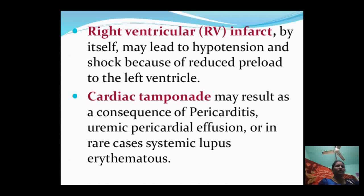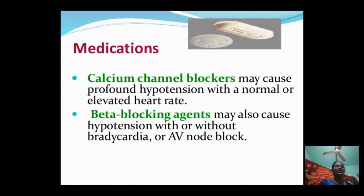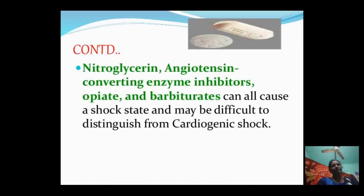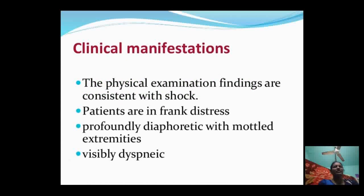Right ventricular infarction by itself may lead to hypotension and shock due to reduced preload to the left ventricle. Cardiac tamponade may also result from pericarditis or uremic pericardial effusion. Medications such as calcium channel blockers, beta-blocking agents, nitroglycerin, ACE inhibitors, and barbiturates can also cause shock states that may be difficult to distinguish from cardiogenic shock.